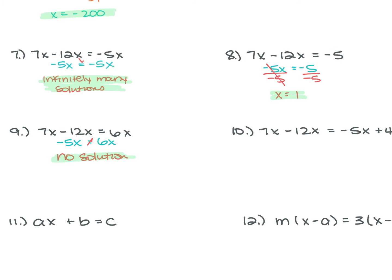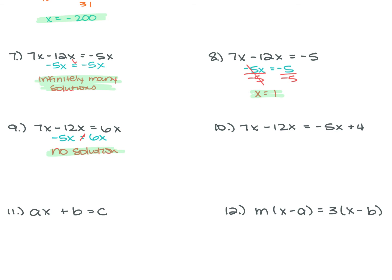For number 10, we have 7X minus 12X is equal to negative 5X plus 4. The 7X minus 12X is negative 5X, so negative 5X is equal to negative 5X plus 4. We add 5X to both sides, giving us 0 is equal to 4. That's not true, so there is no solution.